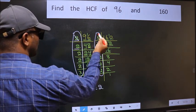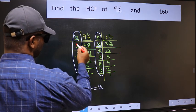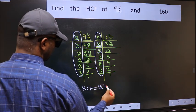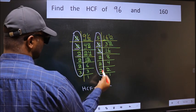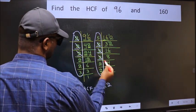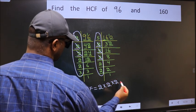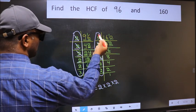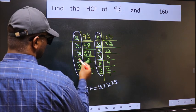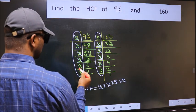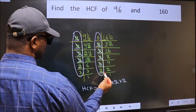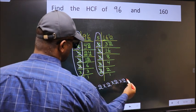Next number 2. Do we have 2 here? Yes. So cut 2 right here. Next number 2. Do we have 2 here? Yes. So cut 2 right here. Next number 2. Do we have 2 here? Yes. So cut 2 right here.